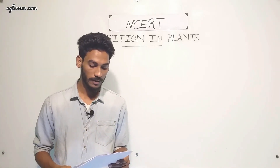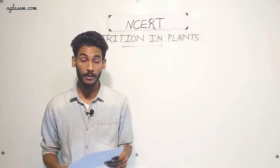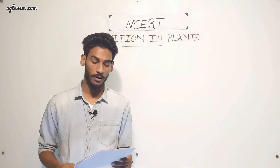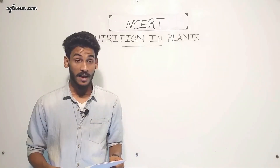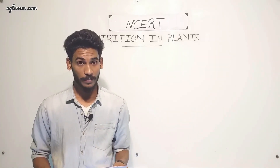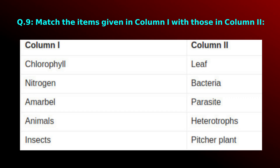Question 9 — Match the items in column 1 with those in column 2. The matchings are: chlorophyll–leaf, nitrogen–bacteria, Amarbel–parasite, animals–heterotrophs, and insects–pitcher plant.